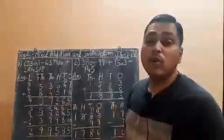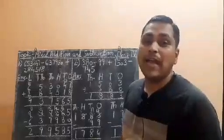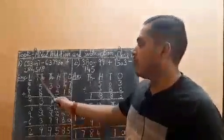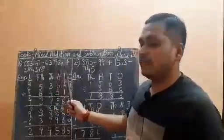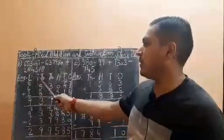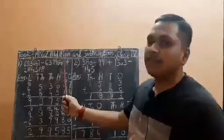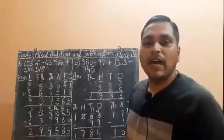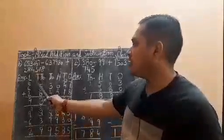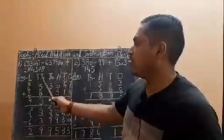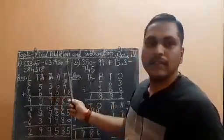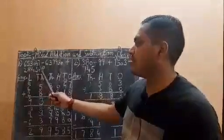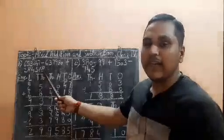How do you know which two numbers are to be added? You have to see the sign which is placed before the number, not after the number. Here, before 2,84,518 a plus sign is written, so you will add 6,53,047 and 2,84,518.